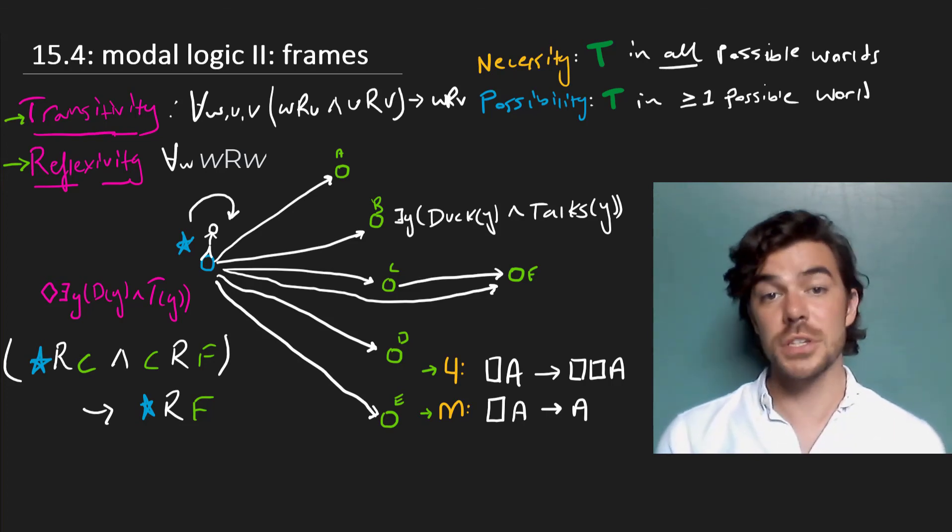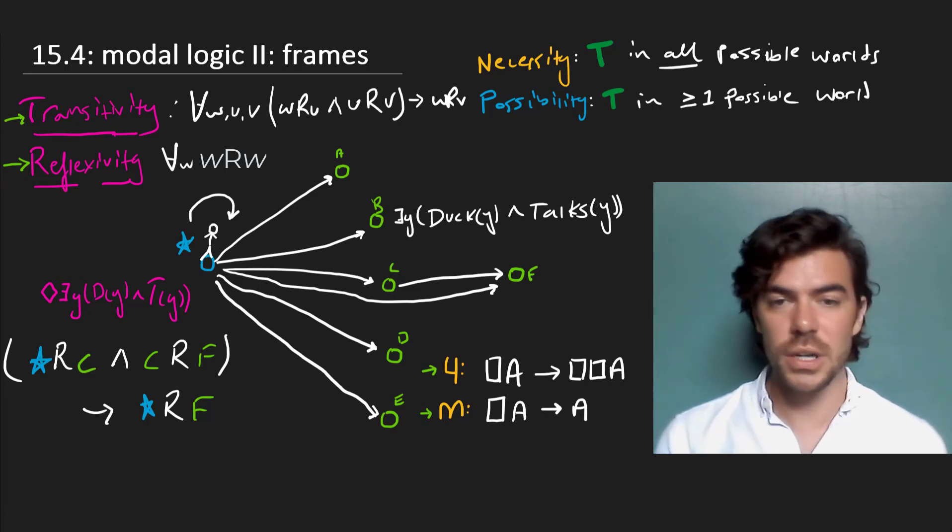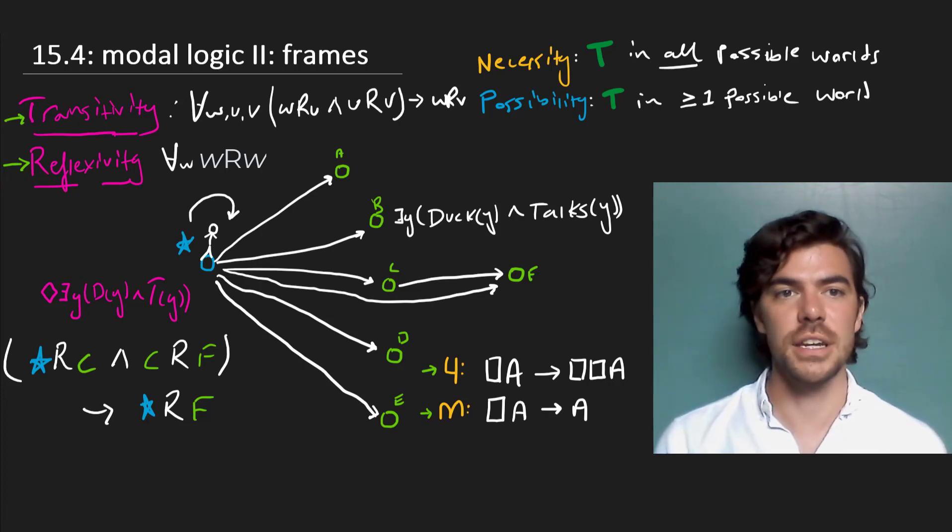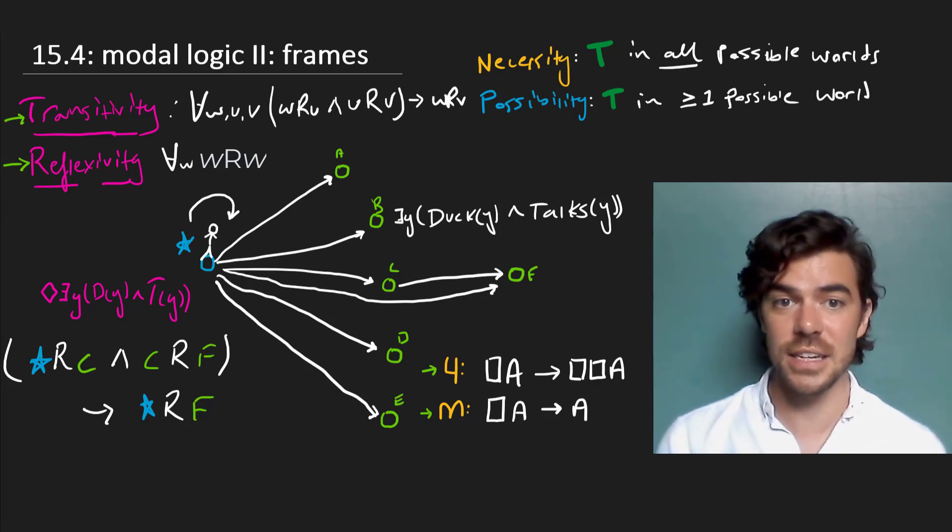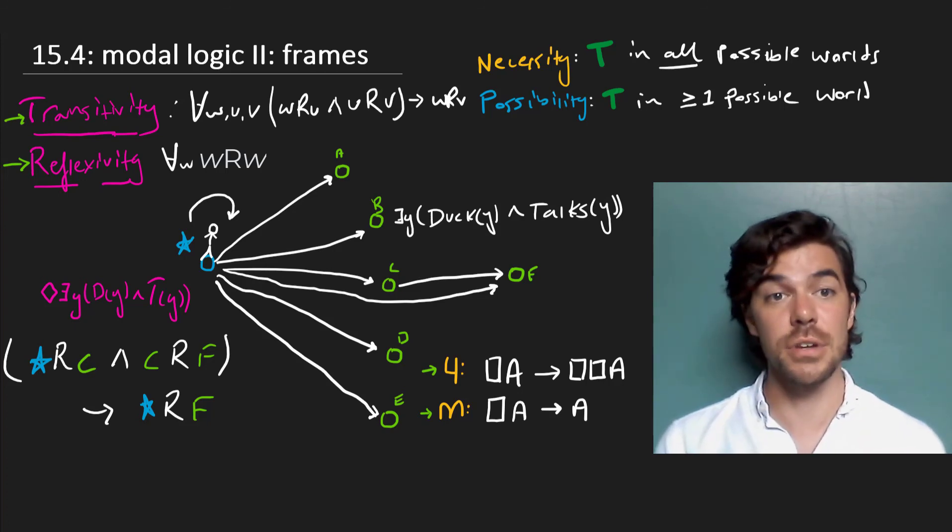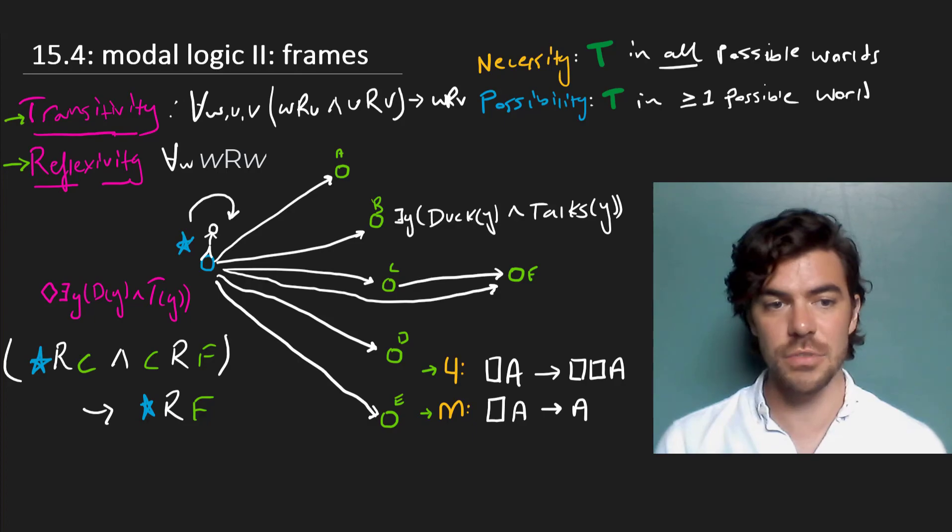So coming up, we'll see some actual systems and the ways that these work based on these different conditions on frames. But the point I just want to get across in this video is that it's conditions on frames that gets us these axioms. And we've seen that by considering two conditions on frames, transitivity and reflexivity, which get us these axioms 4 and M.